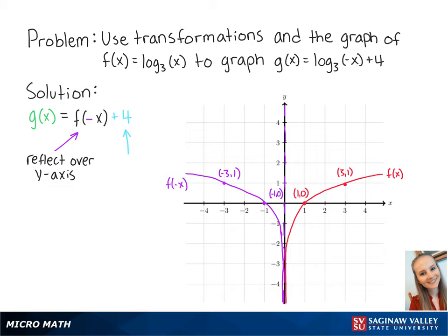Adding 4 to the function means that we shift the new graph up by 4 units. So our new points are at negative 1, 4 and negative 3, 5.